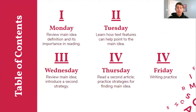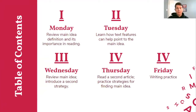On Thursday, we'll read another article and practice our strategies on our own for finding the main idea. And then finally, on Friday, we'll write. Our objective this week is that 6.6b — the student will read and demonstrate comprehension of a variety of nonfiction texts. You will identify the main idea.